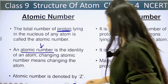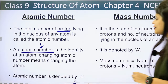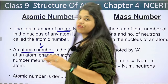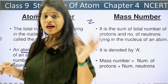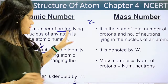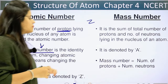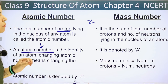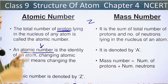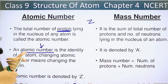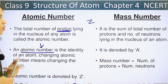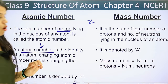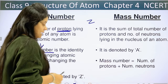Atomic number is denoted by Z. Next is mass number. It is the sum of the total number of protons and the number of neutrons lying in the nucleus of an atom.